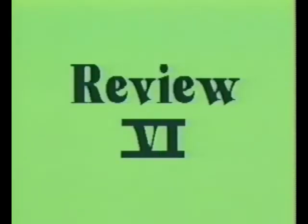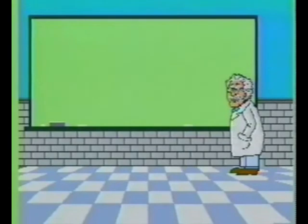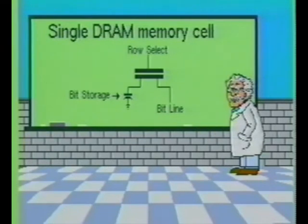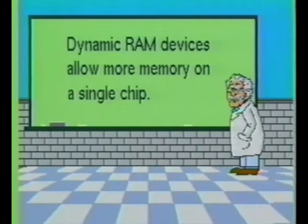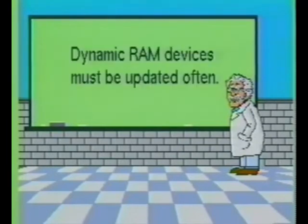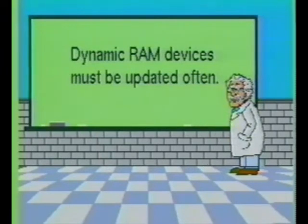Let's review the most recent material we have discussed. The memory cells contained within the dynamic RAM device store information as a charge on a capacitor connected to a single metal oxide semiconductor transistor. Single transistor memory cells allow more memory to be placed on one chip and also require less power per bit. Due to the small size of the capacitor used to store a single bit of data, the dynamic RAM device must be updated frequently. This updating sequence is called the refresh cycle.